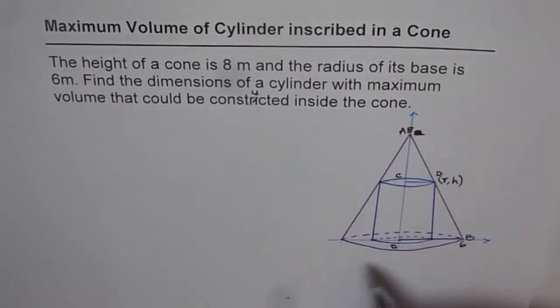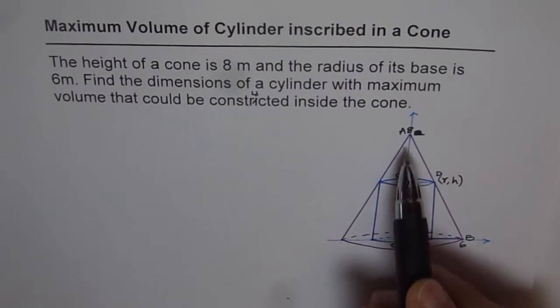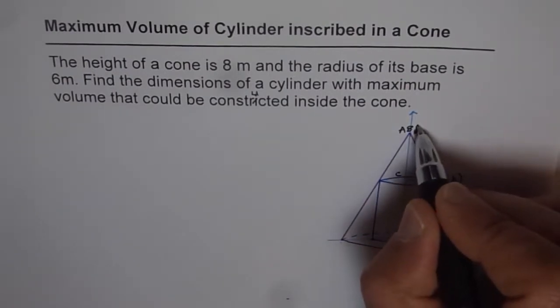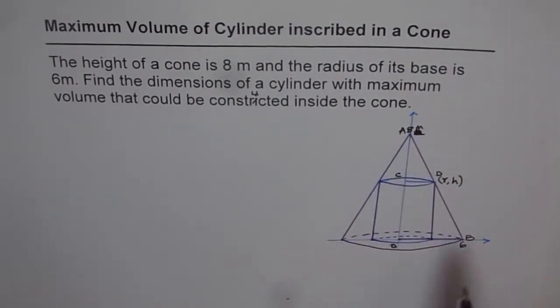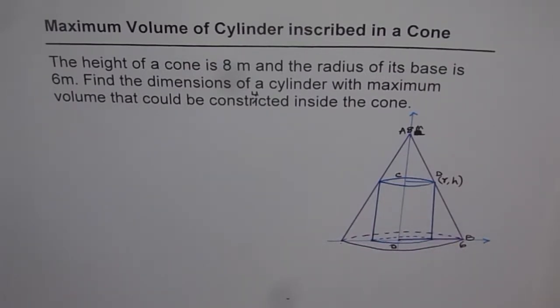So here we have a sketch of the situation. We have a cone which has a radius of 6 and height of 8 meters. Now we need to find the maximum volume of a cylinder which could be enclosed within this cone. So I would like you to make an attempt to solve this and then look into my solution.